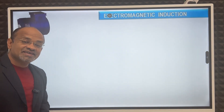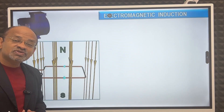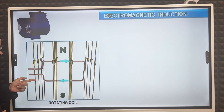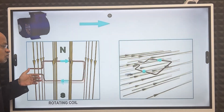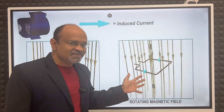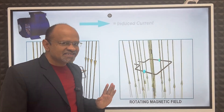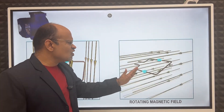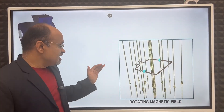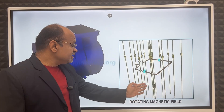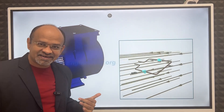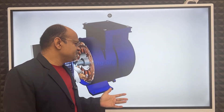To produce electricity in an alternator, either the coil is rotated through a magnetic field, or the magnetic field is rotated and the coil is stationary — either of the two must occur to produce electricity. In an alternator, we use a rotating magnetic field.